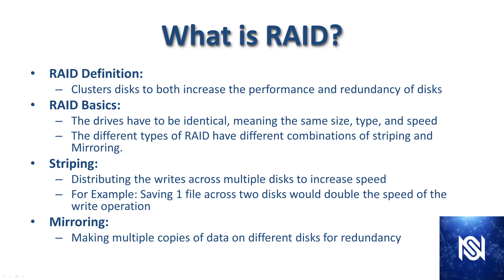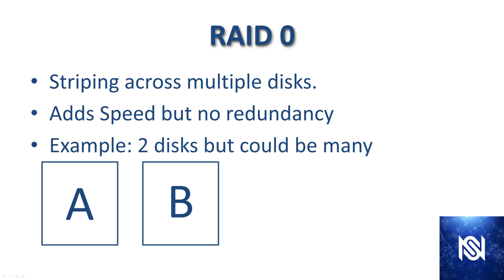Striping is distributing the writes across multiple disks to increase speed. For example, if you're saving one file across two disks, that would double the speed of the write operation. Mirroring is pretty much what it sounds like — it's making multiple copies of data on different disks for redundancy.